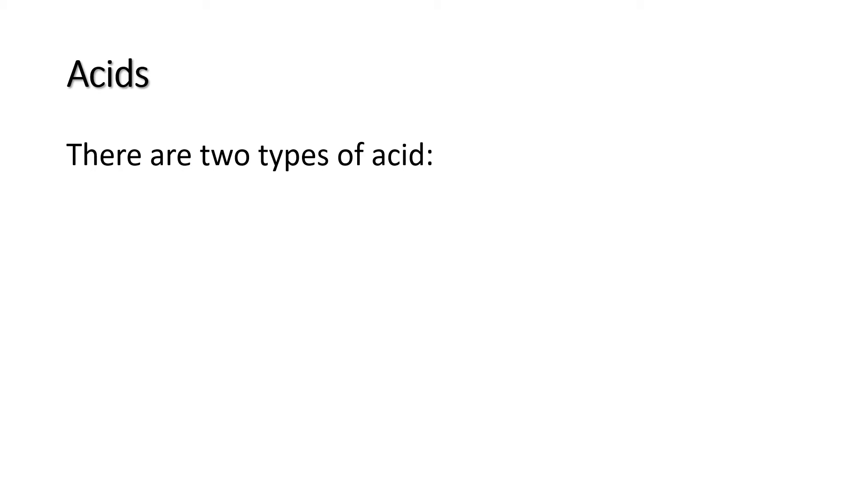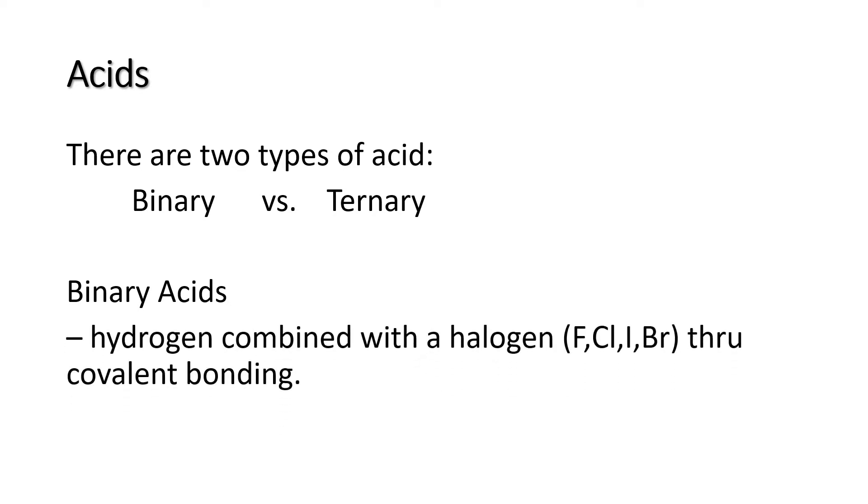When we say acids, there are two types of acids. We have binary and ternary acids. When we say that an acid is binary, it is composed of two different elements. Hydrogen is combined with a halogen, either fluorine, chlorine, iodine, or bromine, and the bonding is covalent bonding.